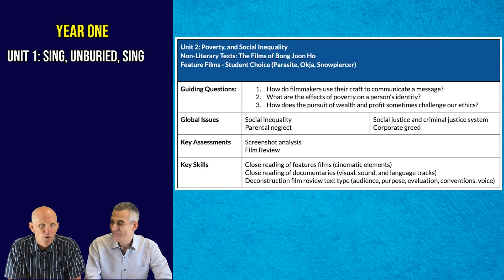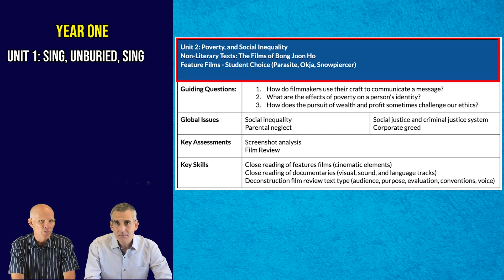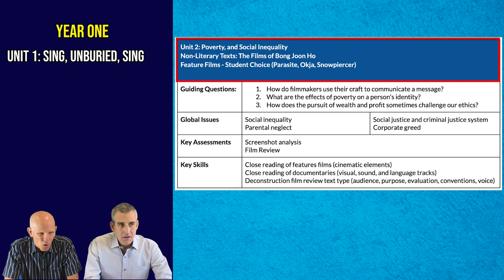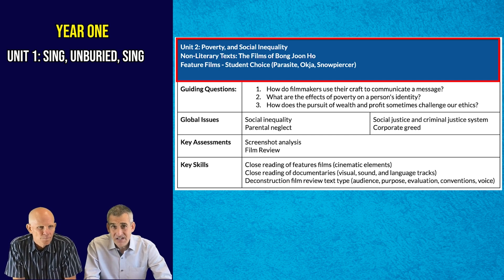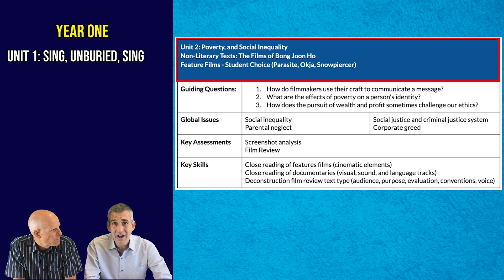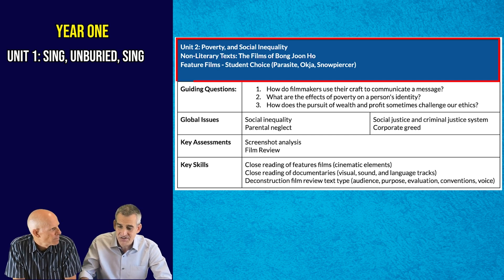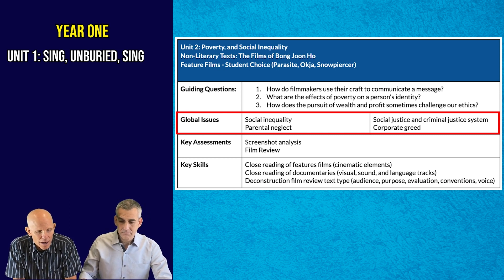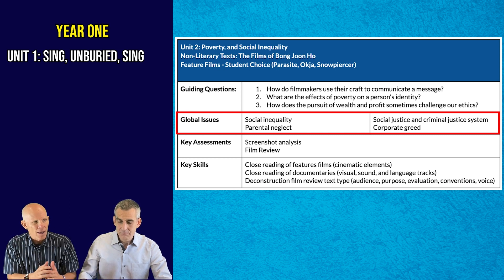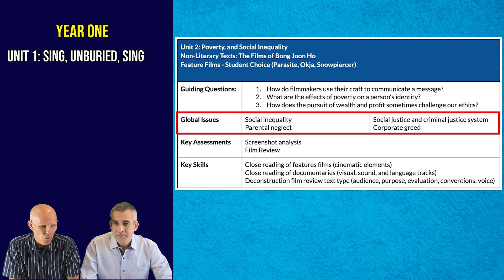Our next unit — we live in Asia, and we wanted to have an Asian voice right away, and we also wanted to do film. The films of Bong Joon-ho are so powerful. It's a great opportunity for us to introduce visual literacy early in the course — teachers know how important this skill is for paper one, for the individual oral, and just for life in general, being able to decode and unpack visual messages. We use Parasite as our anchor text, and then we also use the other films of Bong Joon-ho as a choice board. Looking at a variety of films — not only Parasite but also Okja — you can talk about genetic engineering, corporate ethics. He's really addressing a lot of powerful things, and our students have really benefited from that greatly.